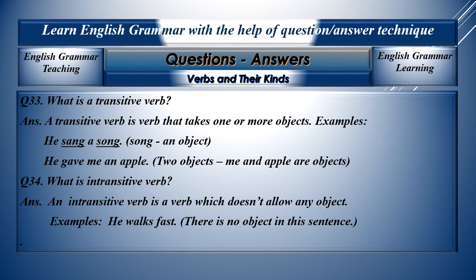Question thirty-three: What is a transitive verb? A transitive verb is a verb that takes one or more objects. For example, 'he sang a song' — 'song' is an object. 'He gave me an apple' — there are two objects: 'me' is the indirect object and 'apple' is the direct object. Question thirty-four: What is an intransitive verb? An intransitive verb is a verb which doesn't allow any object. For example, 'he walks fast' — there is no object in this sentence.